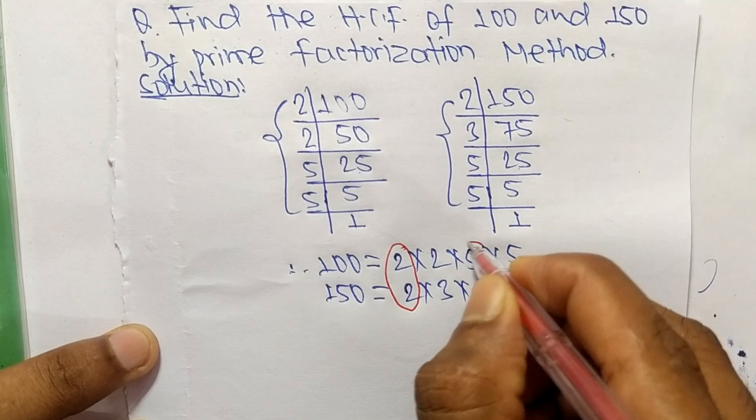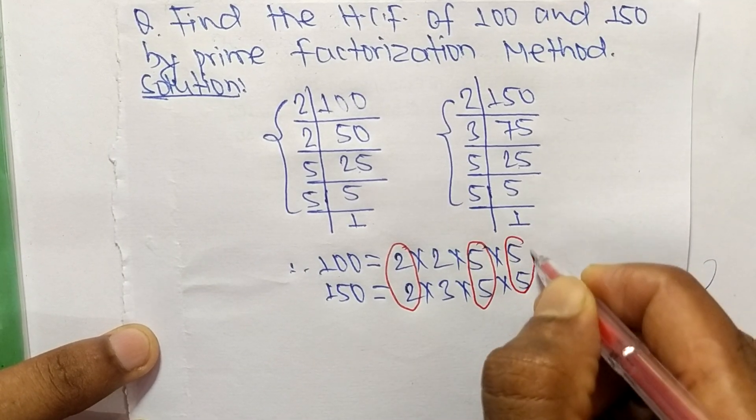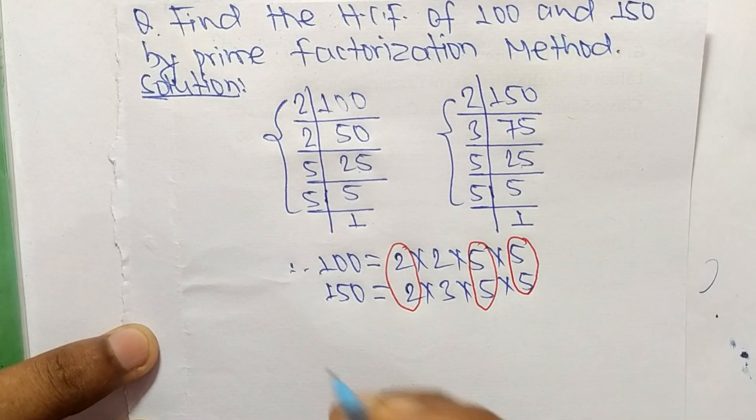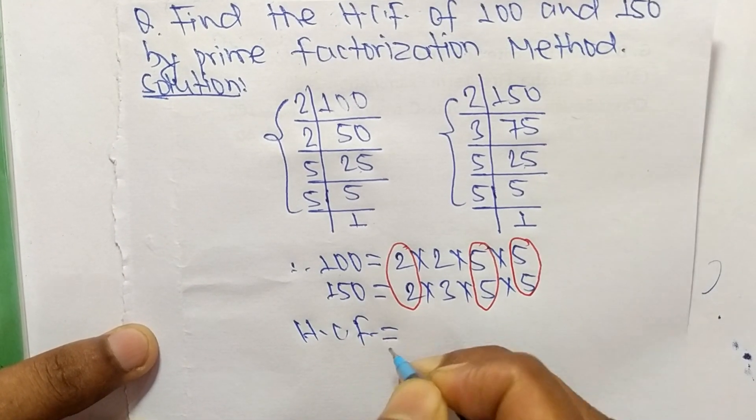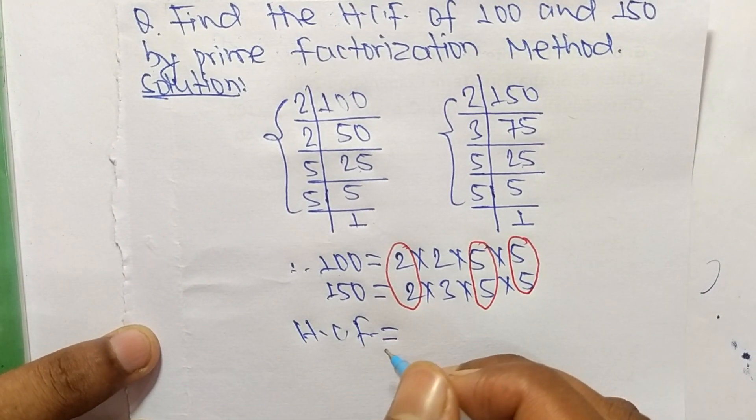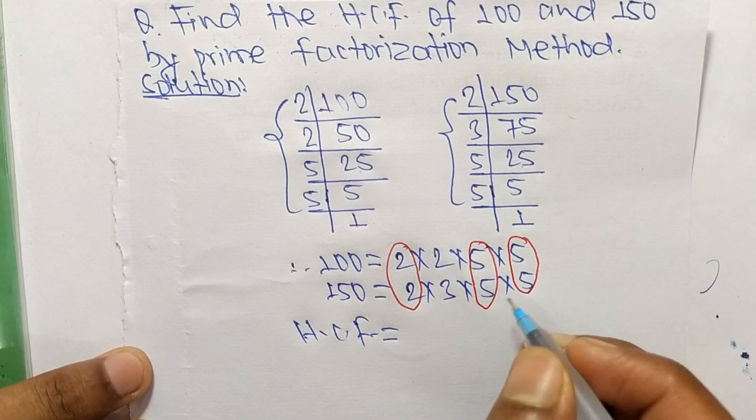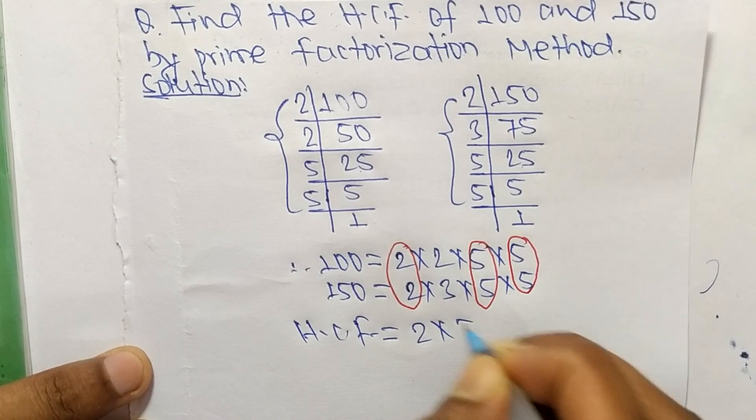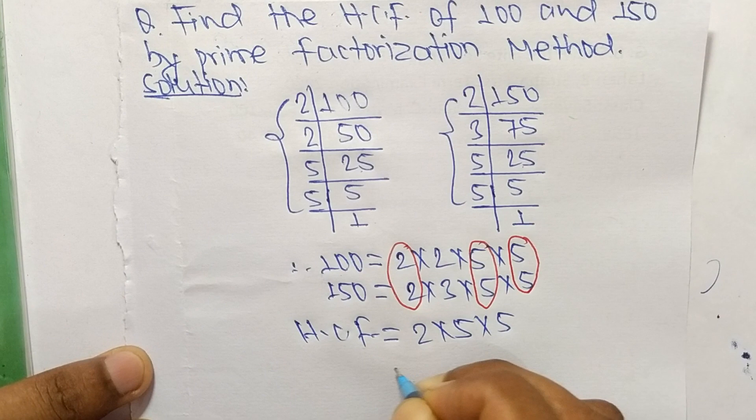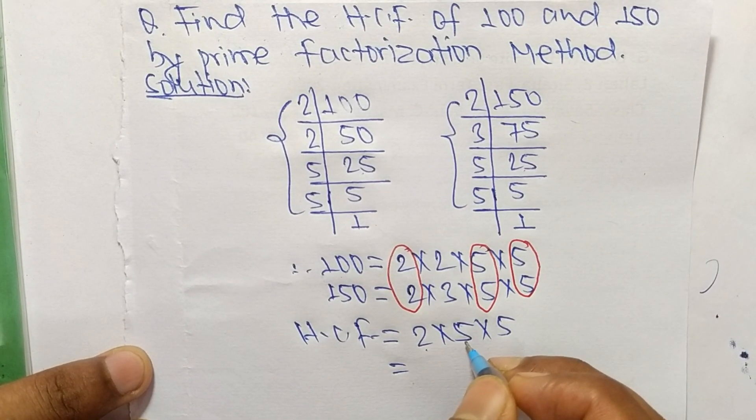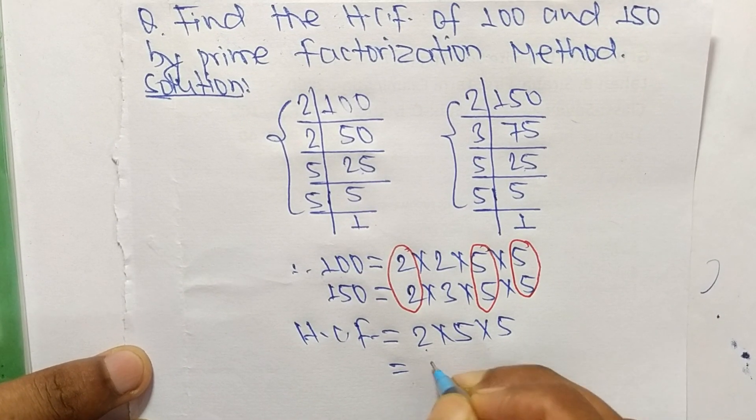So the HCF is equal to the product of common factors. The common factors we have here are 2, 5, and 5. So it is 2 times 5 equals 10, and 10 times 5 equals 50.